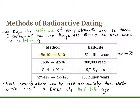We know the half-lives of many elements and use them to determine how old things are based on how long the half-life is. For example, beryllium-10 will decay to boron-10, and after 1.5 million years, a sample of 100 atoms of beryllium-10 will decay to 50 atoms of boron-10. Carbon-14 to nitrogen-14 has the quickest half-life and is one we use a lot. Each method can be used accurately for dates up to about 10 times the half-life.